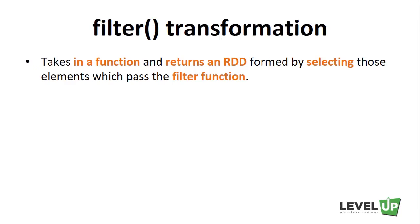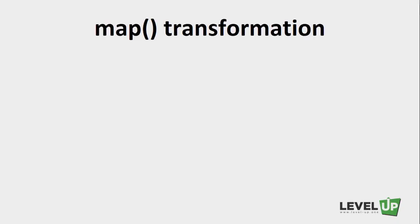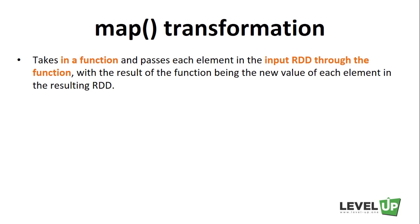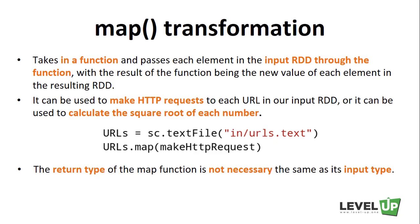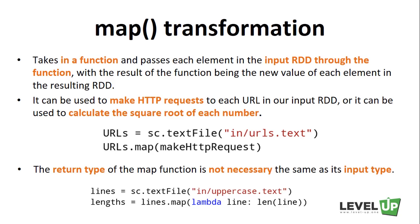The filter transformation takes a function and returns an RDD formed by selecting elements which pass the filter function. It can be used to remove invalid rows or get a subset of the input RDD. The map transformation takes a function and passes each element through it, with the result being the new value of each element in the resulting RDD. Map is versatile — it can make HTTP requests to each URL, or calculate the square root of each number. The return type of the map function is not necessarily the same as its input type: for example, a string RDD mapped through a function returning string length would produce an integer RDD.